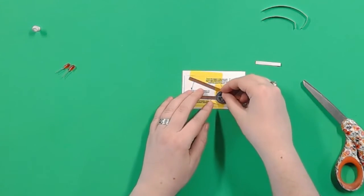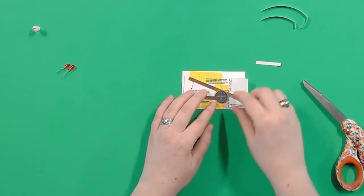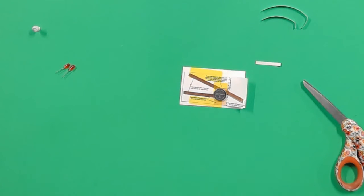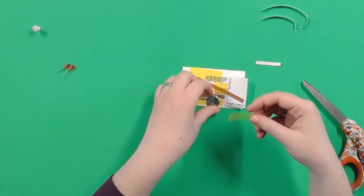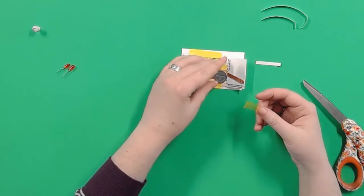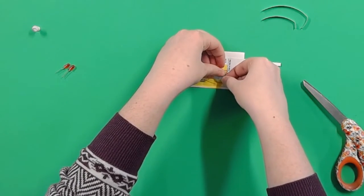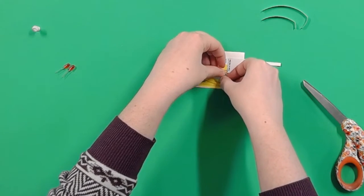Now we can just tape down the battery, but we have to make sure we leave the middle part uncovered, so just tape the edges down. This way, when we fold over the flap, the long copper tape will touch the top of the battery and close our circuit.